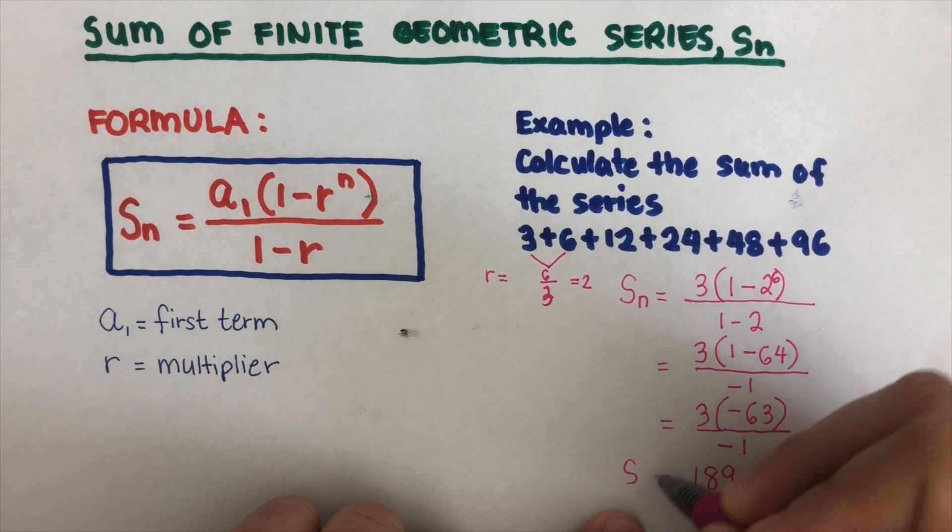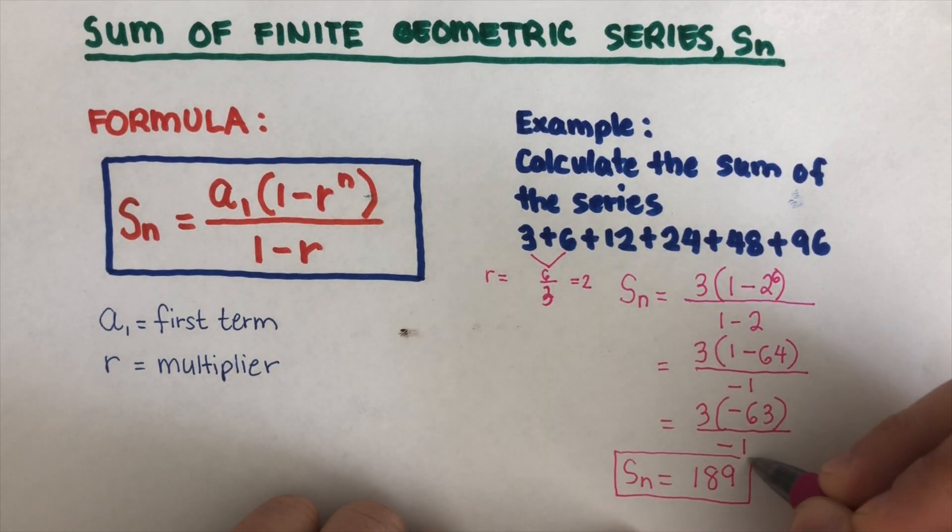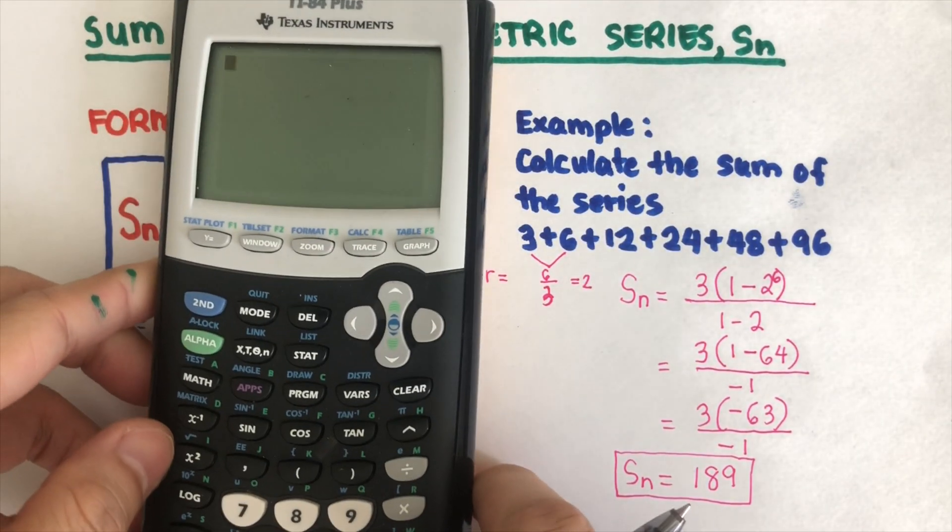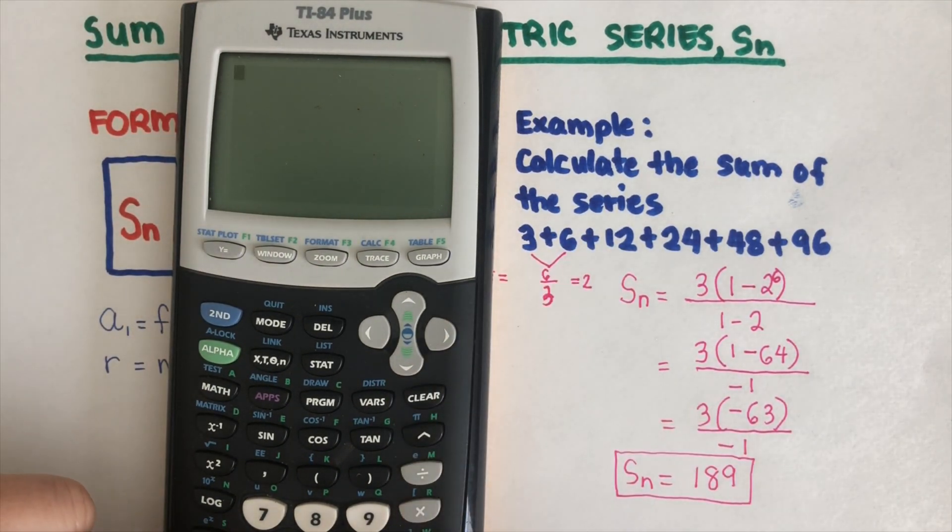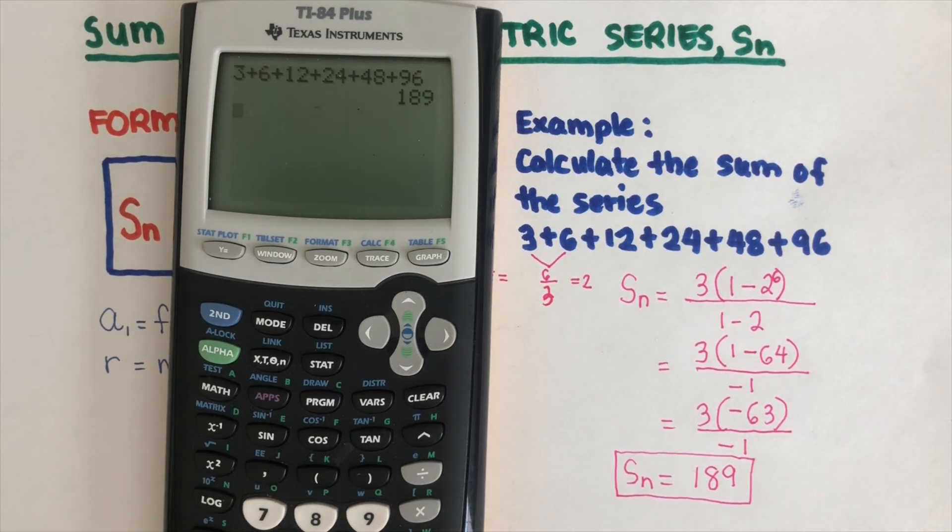And that is the sum for this series. Let's check on the calculator to see if it's 189. So that's 3 plus 6 plus 12 plus 24 plus 48 plus 96, and it came out to be 189.